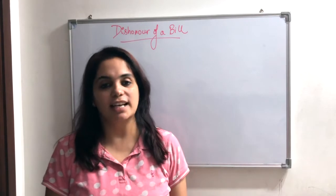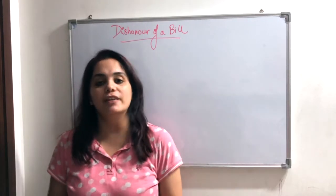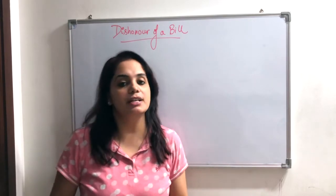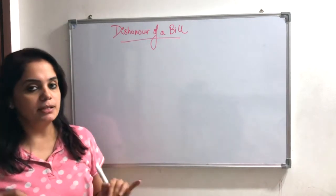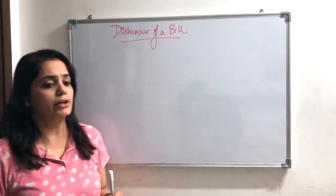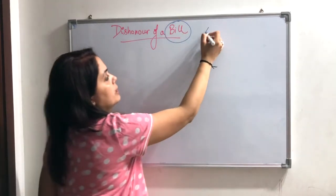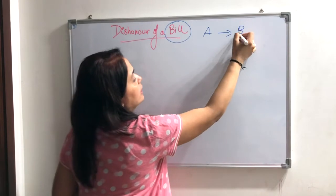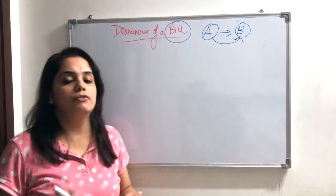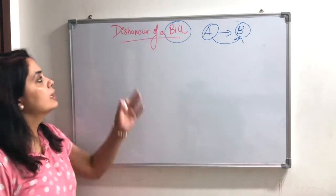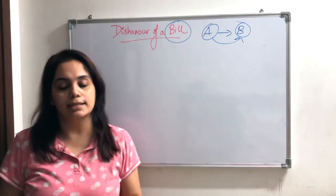Hello everyone and welcome to my channel Commerce Minded. My name is Priyanand, and in this video we will be discussing more journal entries of bills of exchange in case of dishonor of a bill. I am going to tell you about what happens if the bill is dishonored on a due date, in a case of A and B, where B being the drawee has to pay Rs. 50,000 after 6 months. So how will the journal entries be passed?